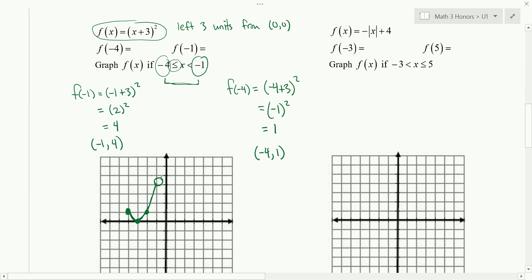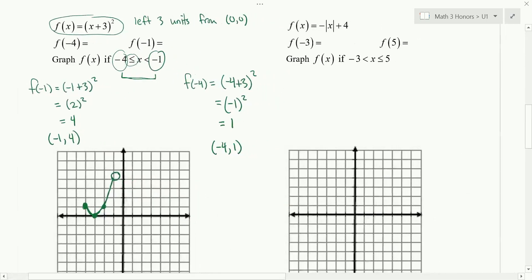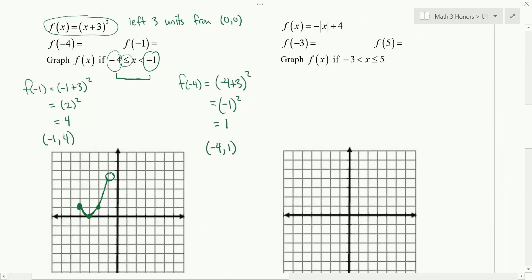And there we have it. So those are the key pieces you need. You need the right vertex, you need the right endpoints, and the right shape in there. Questions on that one? So it's like what we've been doing before. We're just doing less. We're graphing less, but thinking about it a little bit more.